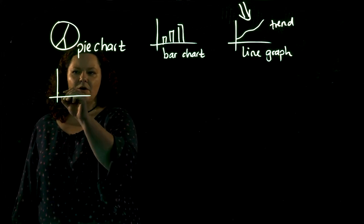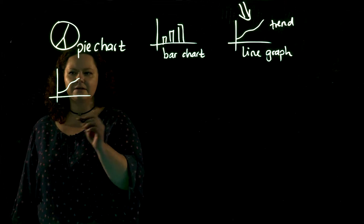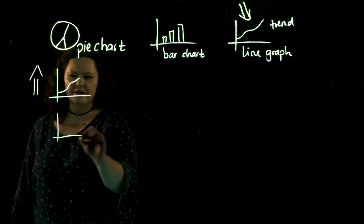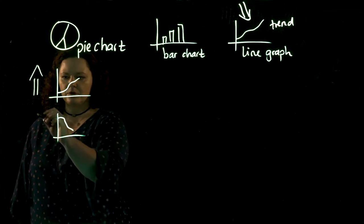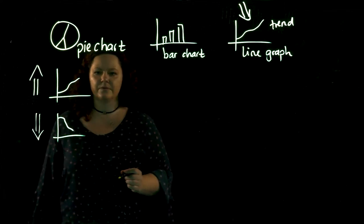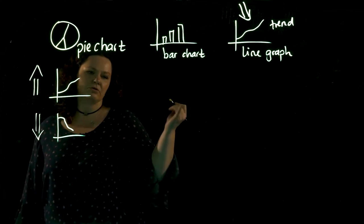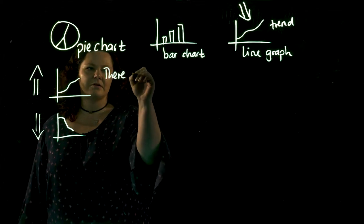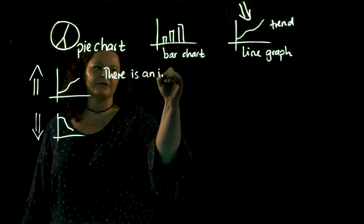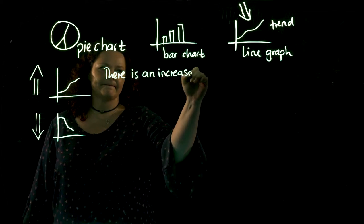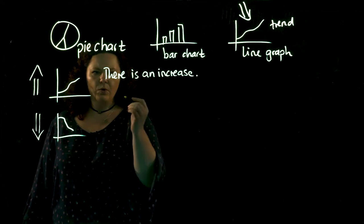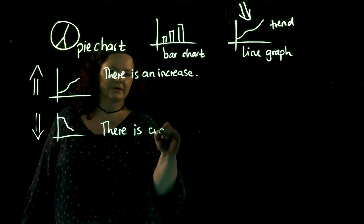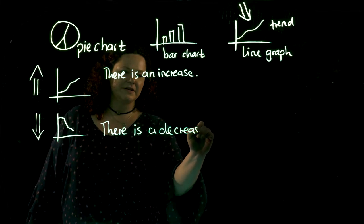The first thing is the overall one. This one goes up. On the other hand, this one goes down. So we've got two or three nouns that we can use. For example, we can say there is an increase. Or the opposite, there is a decrease.